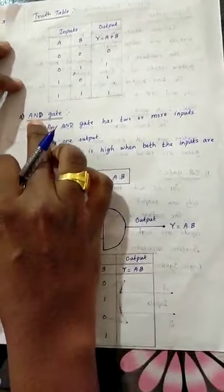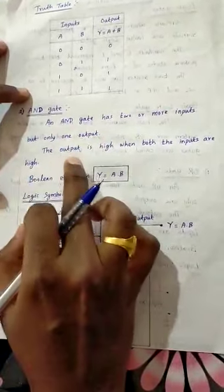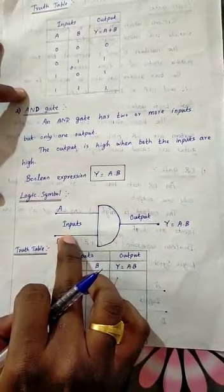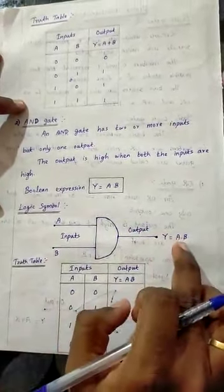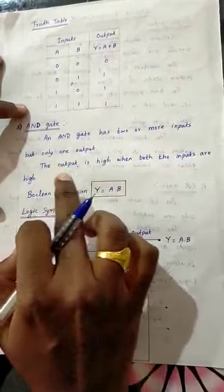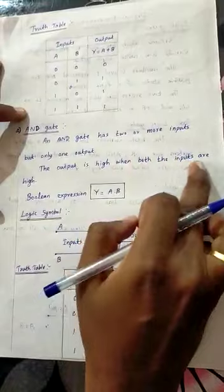Second one is AND gate. An AND gate has two or more inputs but only one output.